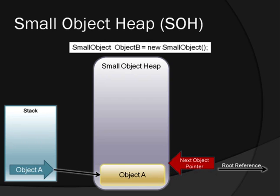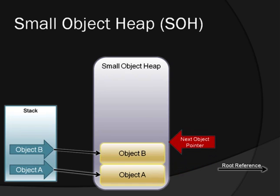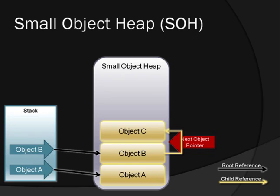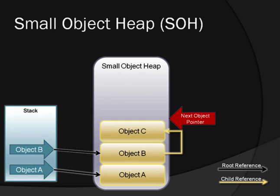When object B is allocated, the process is repeated, but notice that object B references object C, which is also allocated onto the heap. The NextObjectPointer is now set to the top of object C, and the process can begin again. Using this simple mechanism, .NET maintains a heap of consecutive objects.